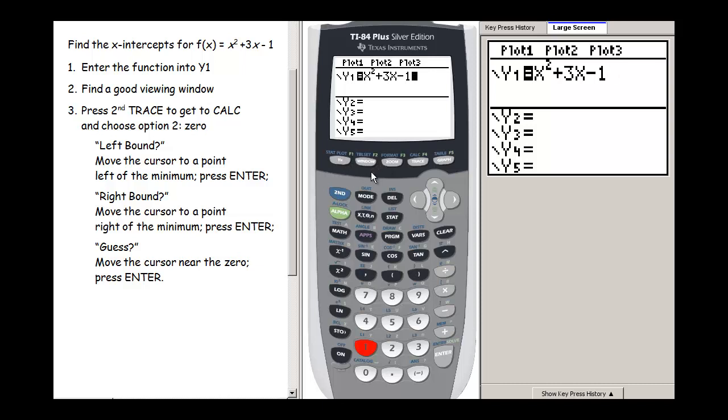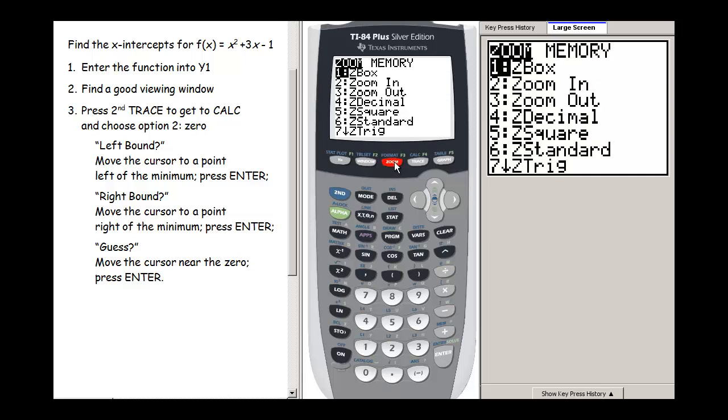Next we need to choose a window. We could choose the window manually or use one of our presets. Let's go ahead and do Zoom Decimal and see if that gives us what we need to see.